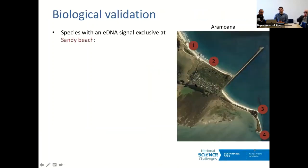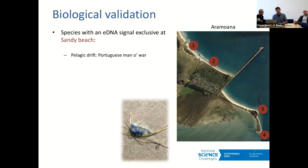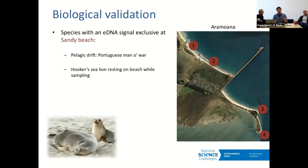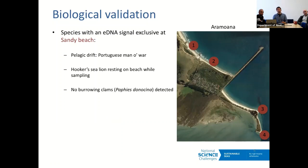We also wanted to do a biological validation — do the actual species we find make sense? On the sandy beach, we get organisms characteristic of pelagic drift, like the Portuguese man-of-war. We also detect Hooker sea lions, which were resting on the beach at the time of sampling. Interestingly, we didn't detect burrowing clams, which we would have expected — that's likely a result of the sampling method. We now think that if you want to detect sediment-dwelling organisms, you need to take sediment samples rather than open water column samples.